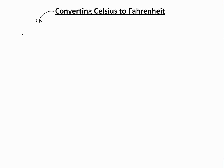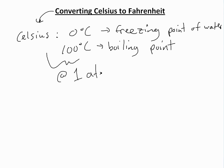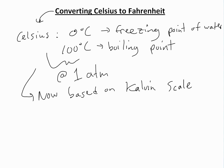We know that Celsius was defined as: zero degrees Celsius is the freezing point of water, and 100 degrees Celsius is the boiling point of water. This definition is at standard atmospheric pressure, or 1 atm. Now it's actually defined based on the Kelvin scale, using absolute zero and the triple point — I'll show this in another video — but regardless, you still get zero and 100.